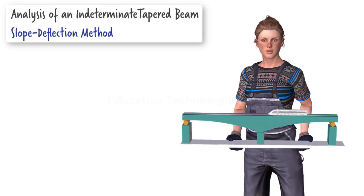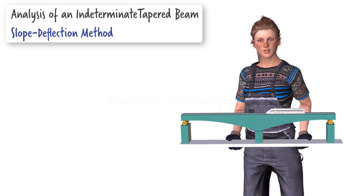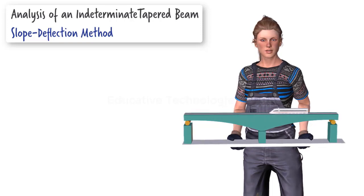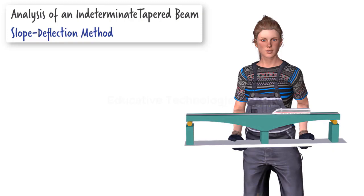Here, I have a model of a railroad bridge consisting of a two-span tapered beam. In this lecture, we're going to use the slope-deflection method to analyze the beam.